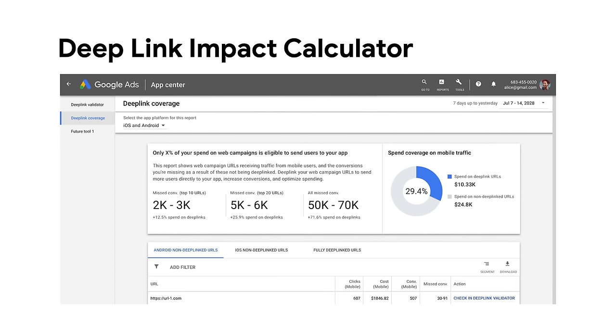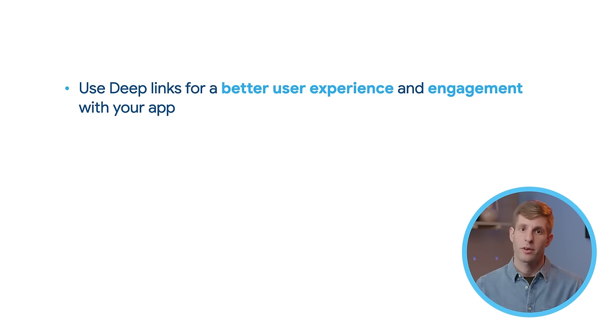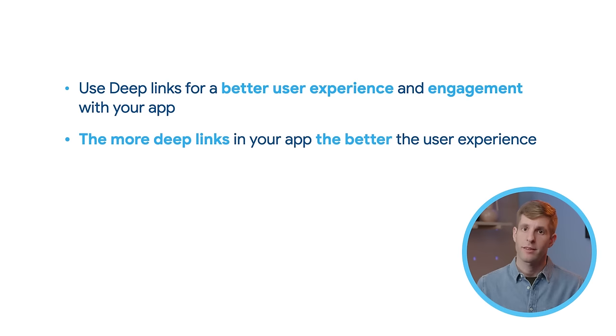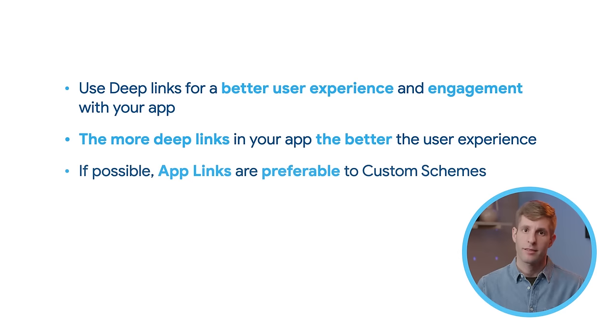We highly recommend that you work with your marketing team to get the reports generated by those tools. The impact calculator allows you to see what deep links are missing in your app and what value you can get from implementing those missing deep links. To summarize, you should use deep links for a better user experience and engagement with your app. The more deep links in your app, the better the user experience. And if possible, app links are preferable to custom URL schemes. For more information, check out the deep linking page on flutter.dev or the Android app links documentation. Thanks for watching.